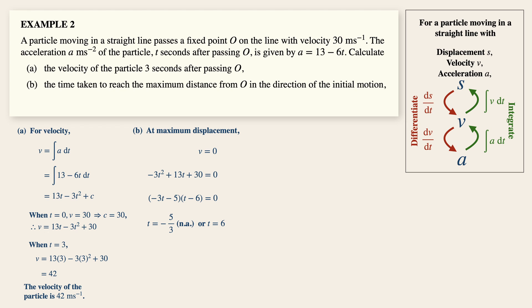Now we will reject the negative value here, since time cannot be negative. So six seconds is all it takes to reach maximum displacement. Or in this case, it is equivalent to reach the maximum distance, since the particle is traveling in a straight line.